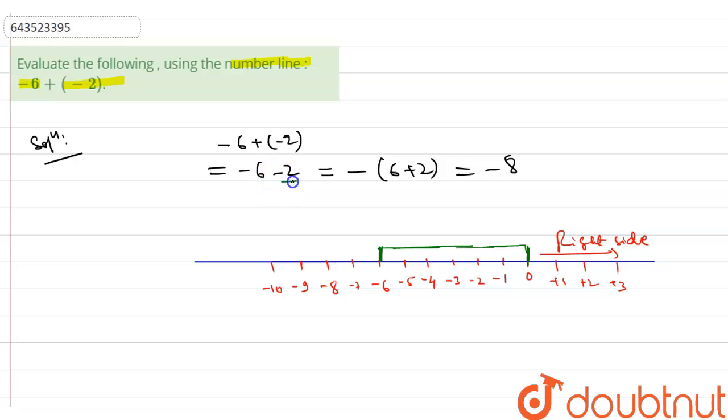As we are seeing, minus two means we have to move two steps in the left side. We have moved six steps in the left side.